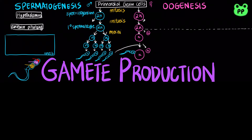Diploid primary spermatocyte then divides into haploid secondary spermatocyte through meiosis I. And through meiosis II, secondary spermatocytes divide into early spermatids, which undergo extensive changes in differentiating into sperm.